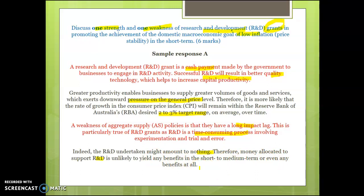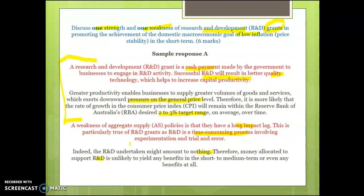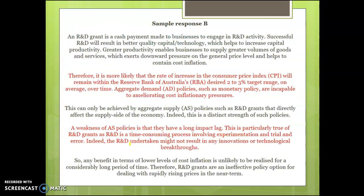The issue with this answer is they've explained the impact the policy is going to have on productivity but said that's enough — they've provided a strength — where they haven't actually provided a particular strength of that policy. Looking at the mark allocation: definition of a strength, definition of a weakness, identify a strength, identify a weakness, explain the strength, explain the weakness. There needs to be a clear link between the specific strength and why it helps achieve that goal, not just talk about how it works in general.